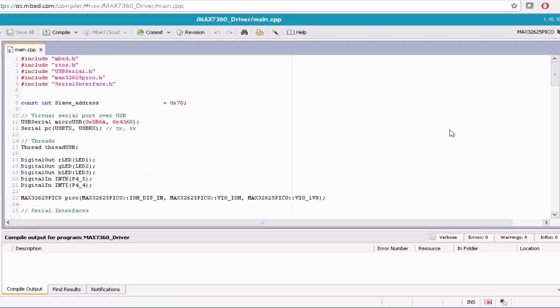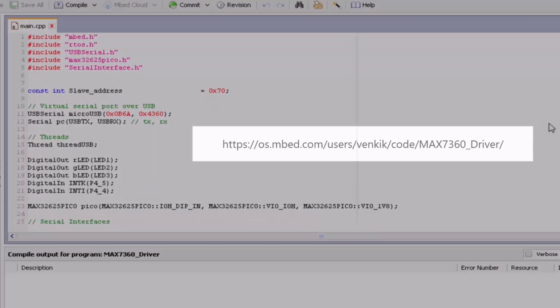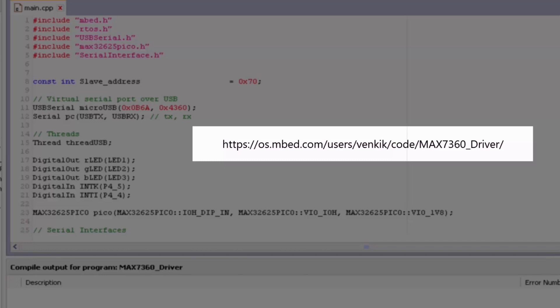Now let's go with the software code. We have developed the sample code for the interface of MAX7360 with MAX32625 Pico board, which can be downloaded from the link below.